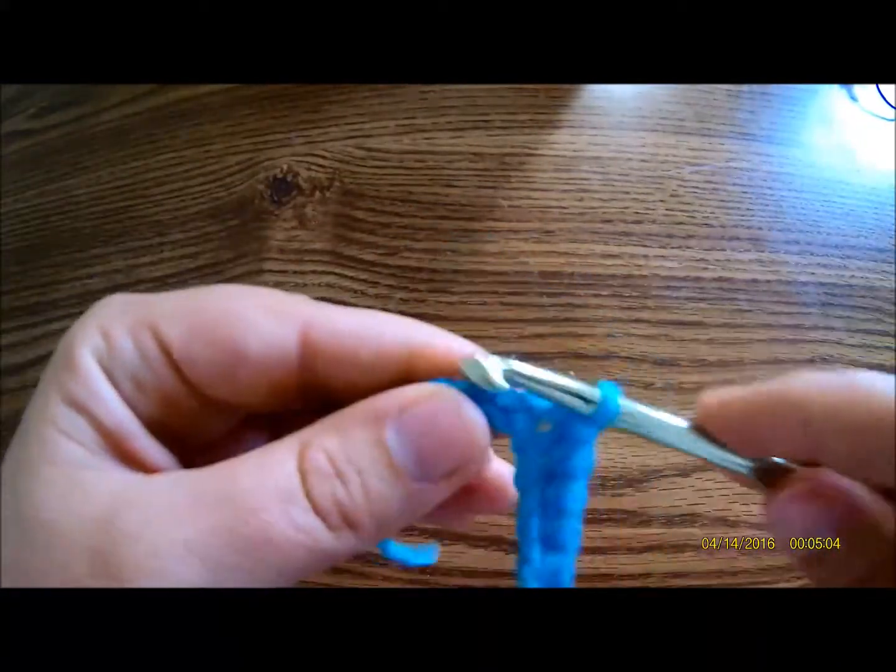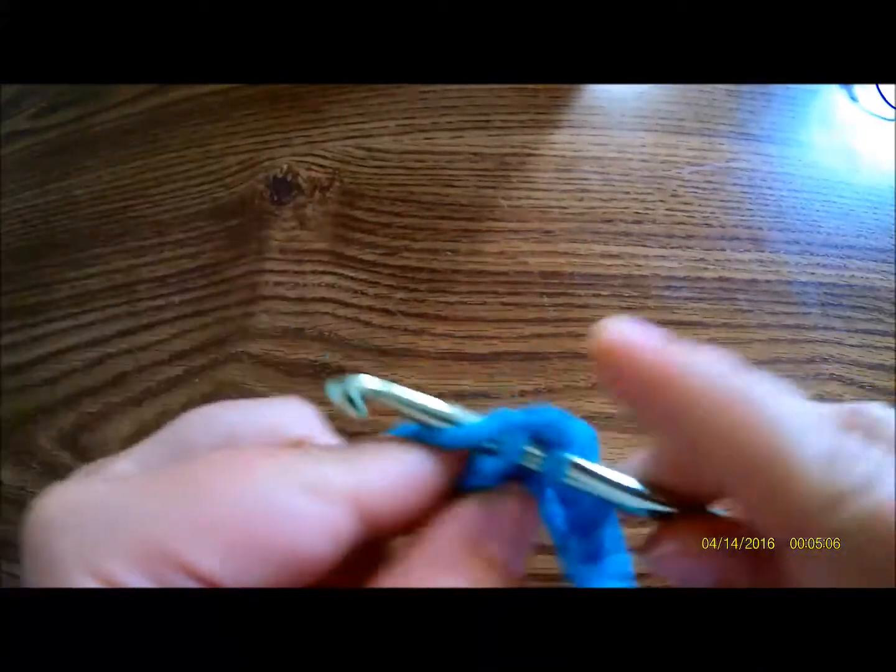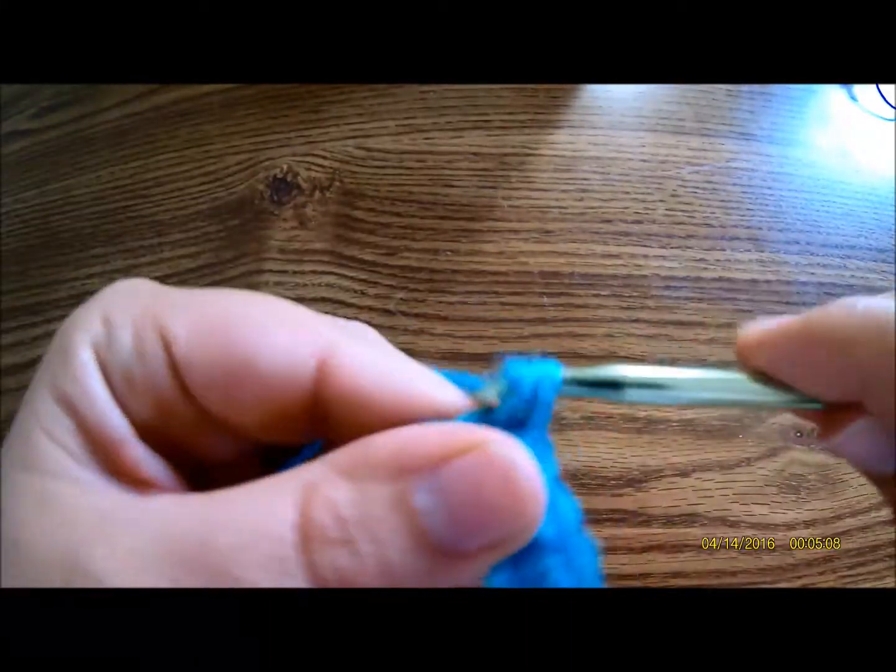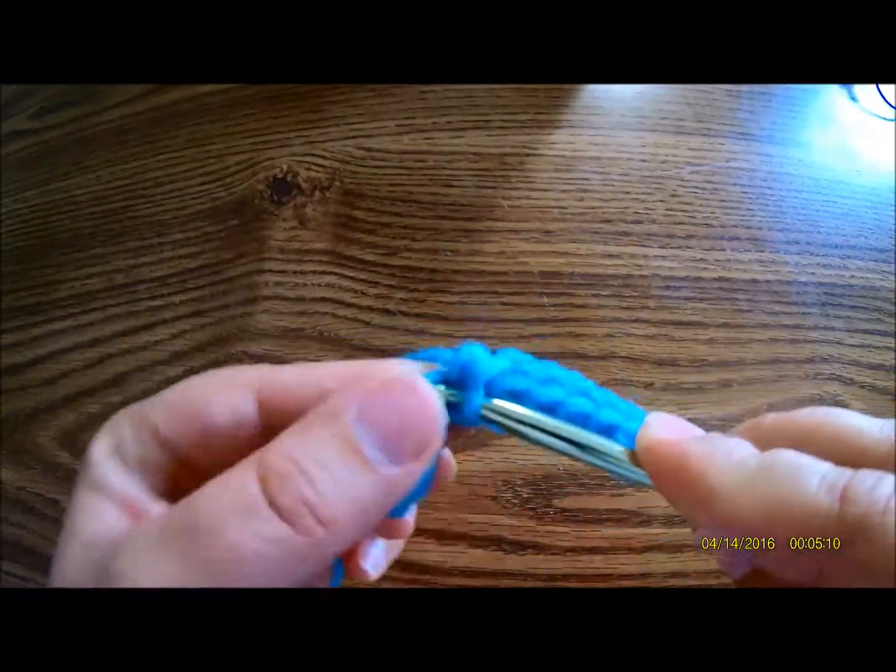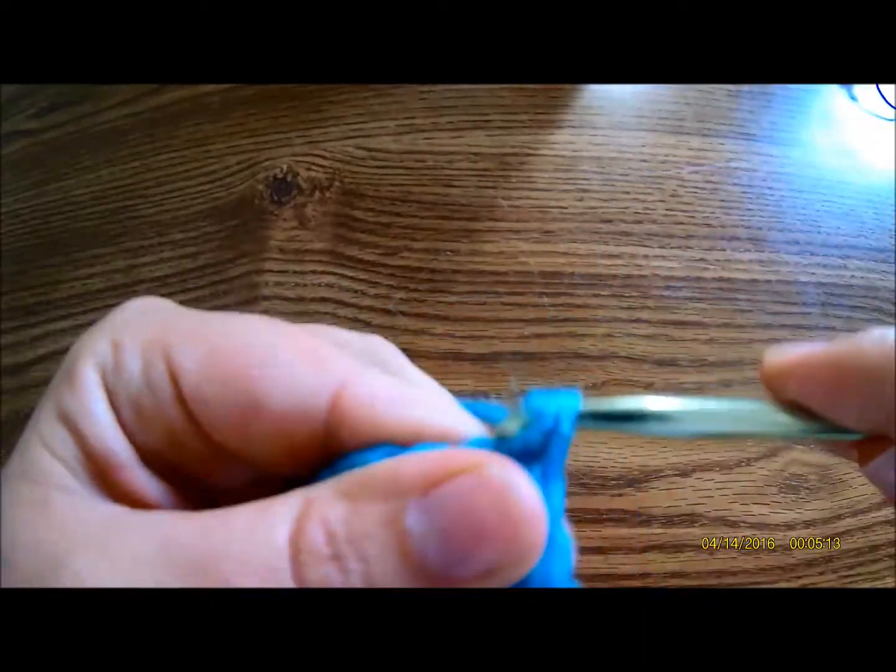Now if you're going to make a washcloth or something, this is something that you would start out doing, is your foundation chain, and then you would just go back with whatever stitch you're using.